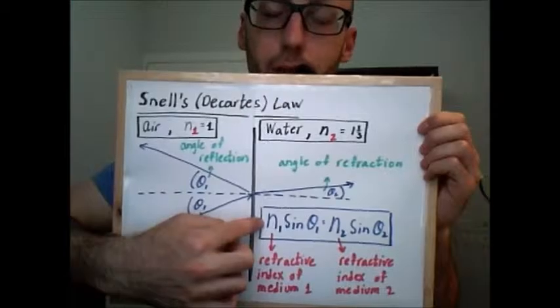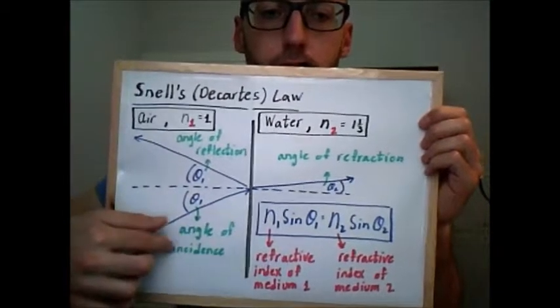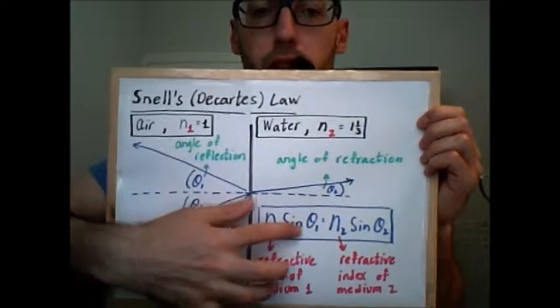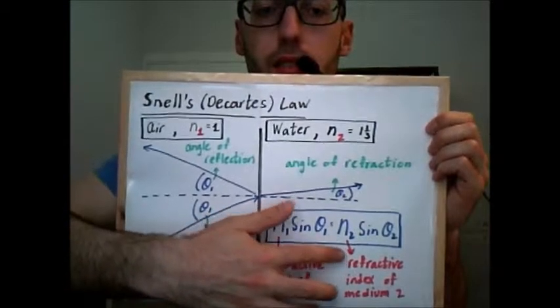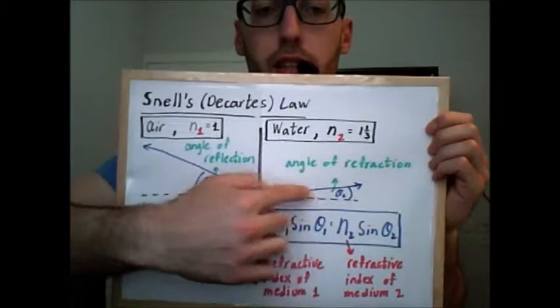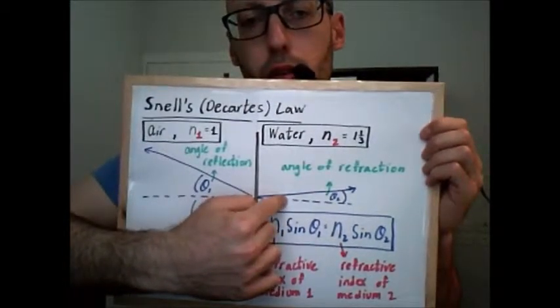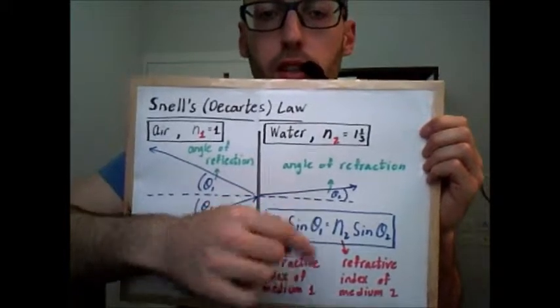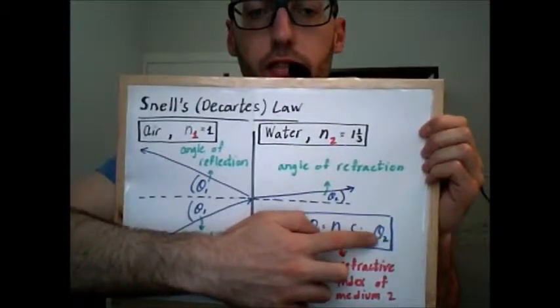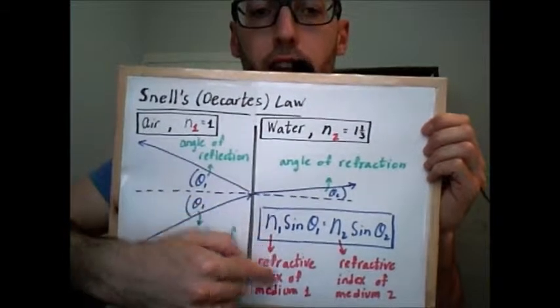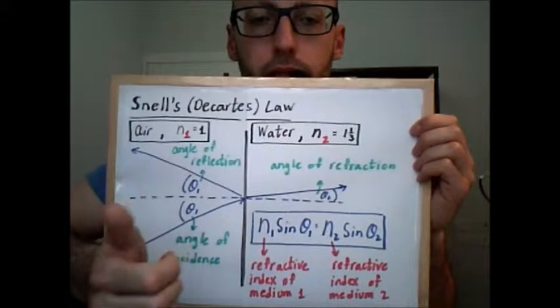And this law describes how to describe the connection between four elements. We have the refractive index of medium 1, which we'll soon explain to you what it is, sinus theta1, which is as we discussed the angle of incidence, equals N2, which is the refractive index of medium 2, times sinus theta2, which is, and I'm saying it for the first time now, angle of refraction. And this is actually the angle in which the photons will proceed moving in the new medium. So this we defined, this we defined. What is this? Refractive index of medium 1, let's discuss what refractive index is.